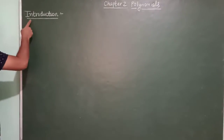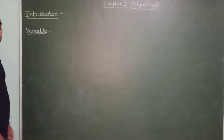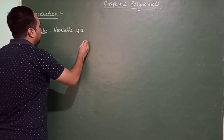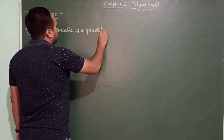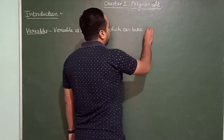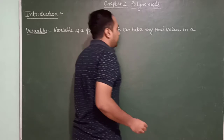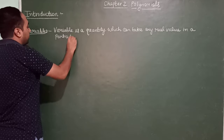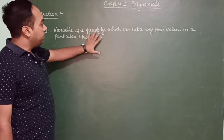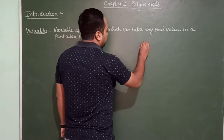The first definition in this introduction is variable. What are variables? A variable is a quantity which can take any real value in a particular situation or in a particular problem.